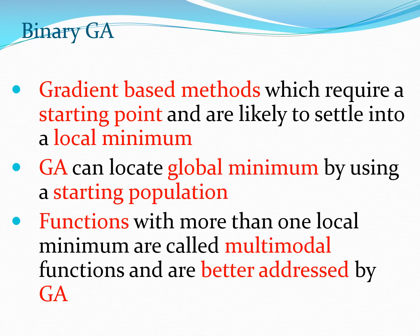Gradient-based methods are very useful and quite rapid in settling to a minimum point, but they do require a starting point x0 and are likely to settle into a local minimum point — essentially the minimum closest to the starting point. The difference between gradient-based methods and a typical GA is that GAs use a starting population, and you can locate the global minimum by using that starting population.